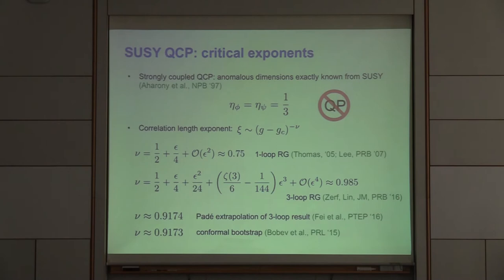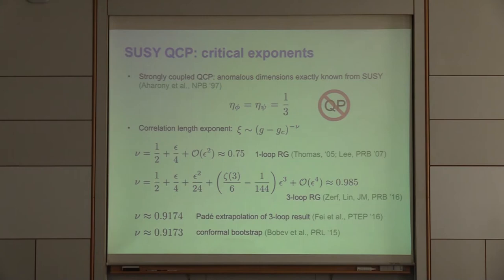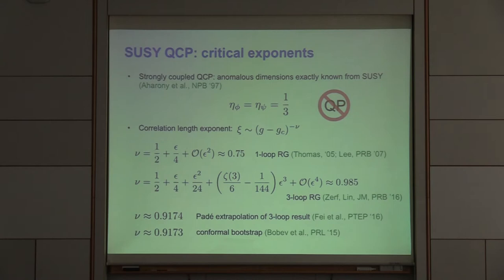One can also compute the correlation length exponent, though there's no exact result there. Perturbative renormalization group calculations pushed to three loops, with Padé extrapolation to 2+1 dimensions, give an approximate value that is fairly close to results from the conformal bootstrap — a non-perturbative numerical approach — giving us a good handle on the critical exponents.